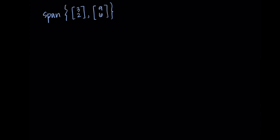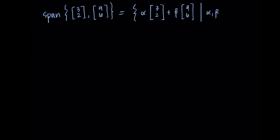Let's consider the span of [3,2] and [9,6]. This equals the set of alpha times [3,2] plus beta times [9,6], where alpha and beta are our real-valued weights. These are linear combinations and we want every possibility for alpha and beta.